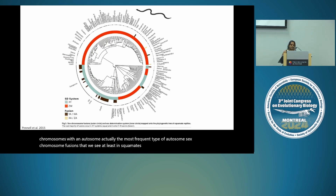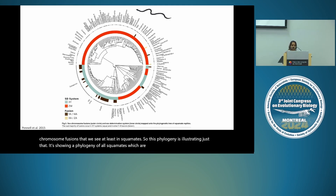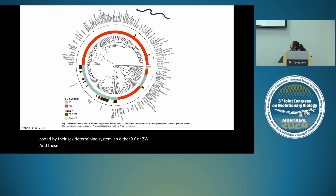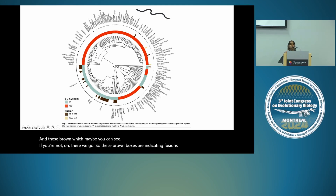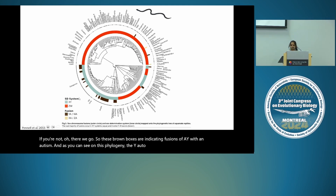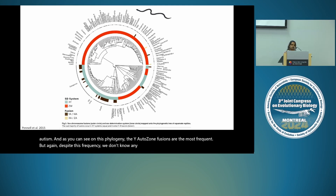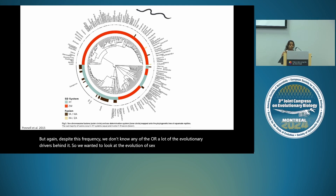A phylogeny of all squamates — lizards and snakes — color-coded by sex determining system (XY or ZW) shows that Y-autosome fusions, indicated by brown boxes, are the most frequent type of fusion. Despite this frequency, we don't know much about the evolutionary drivers. We wanted to look at the evolution of sex chromosomes in Lialis, a group of legless geckos that all have XY chromosomes, but species in the genus Lialis actually have this XXY system.